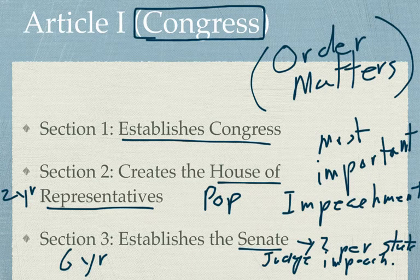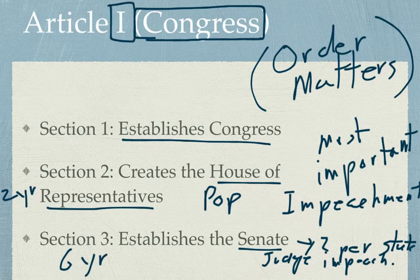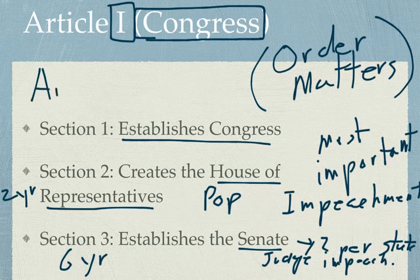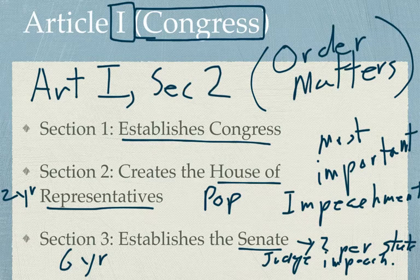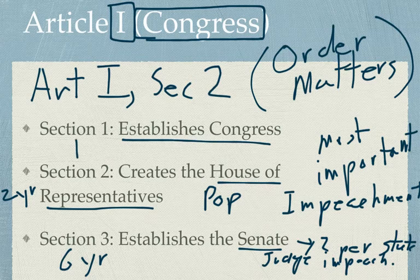When you look at the Constitution or any constitution, you're going to see Roman numerals used for the articles — that's just the way it is in constitutions, and we'll see it the same way on tests. So if we were talking about Section 2, Article 1, you would see it written that way. If you're not overly familiar with Roman numerals, you may want to remind yourself so that you can at least count 1 to 10 in Roman numerals.